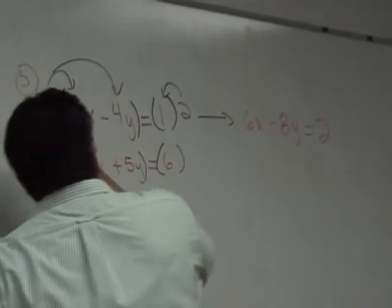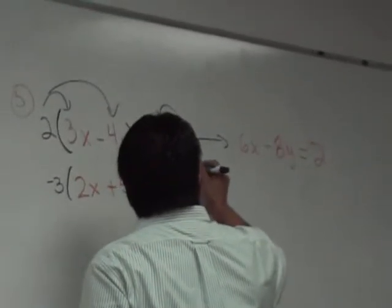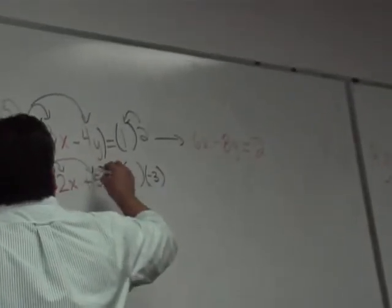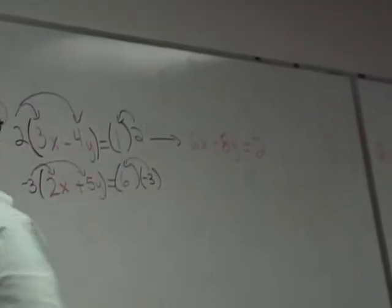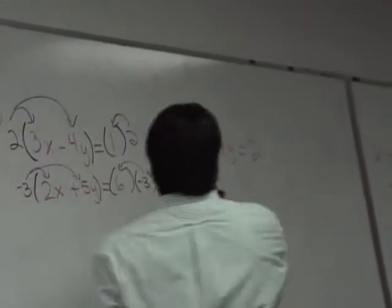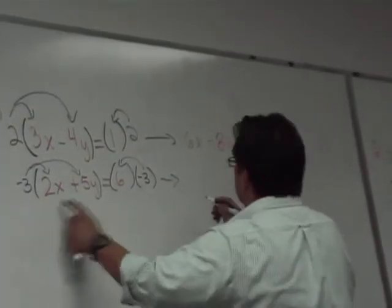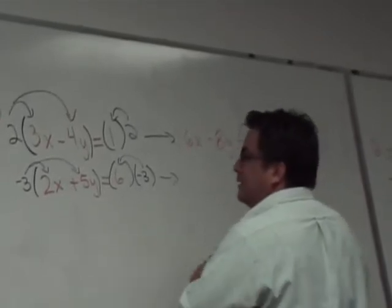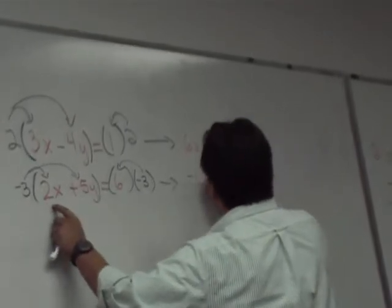Very nice. And if you do it on the left side of the equation, you're going to have to multiply the right side too. So, let's see what the new equation looks like: negative 3 times 2 is negative 6x.